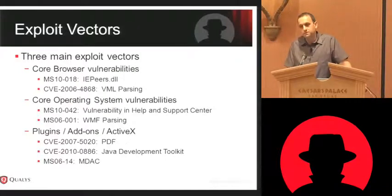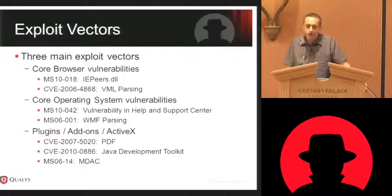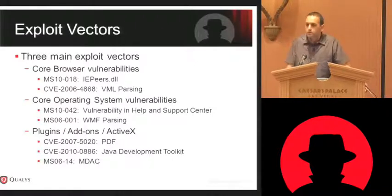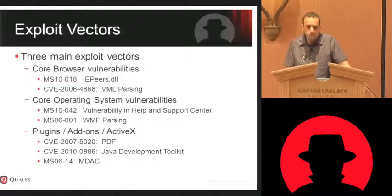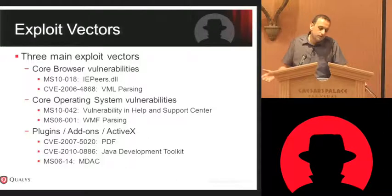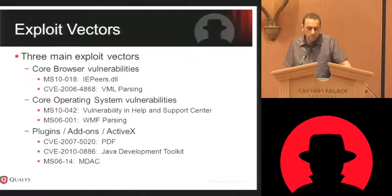Exploit scripts typically take one of three attack vectors. They're either going to go after the core browser — the renderer, the script interpreter, the URL parser, or something along those lines — or they're going to go after a core system vulnerability.